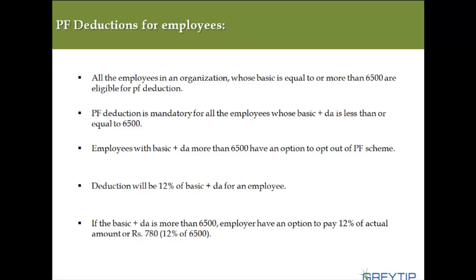Now, PF deduction for employees: all employees working in a company whose basic or basic plus DA is equal to or more than Rs. 6,500 are eligible for PF deduction. If a person's basic is more than 6,500 then it is up to him whether to opt for PF or not. But if a person is earning 6,500 or less, then it is mandatory. The deduction will be 12% of basic plus DA. If basic plus DA is more than 6,500, the employer has the option to pay only Rs. 780, which is 12% of the base criteria.